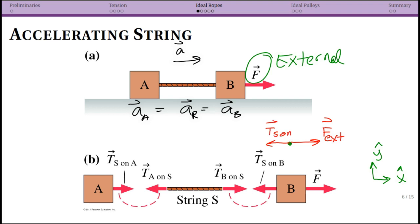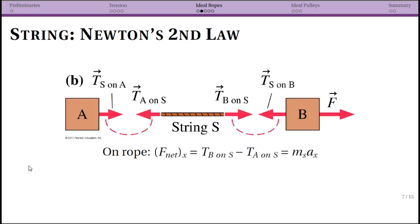Looking at block B, there are two forces in the horizontal direction: the external force and the tension of the string on B. Since there is a net force and acceleration to the right, the rightward external force must be bigger than the tension pulling left. For block A, there is only one horizontal force — the string on A — which gives block A its rightward acceleration.